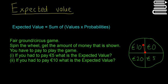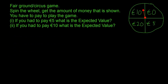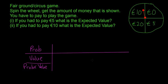So I will scroll down to make some space and I'm going to make out a little table here. So I'm just going to go: prob, value, and then prob times value.